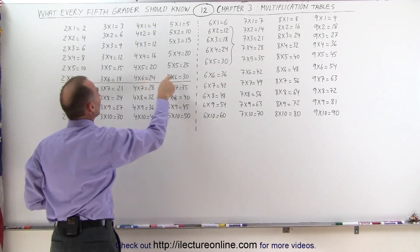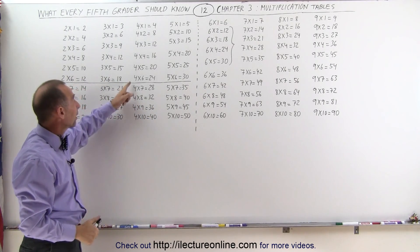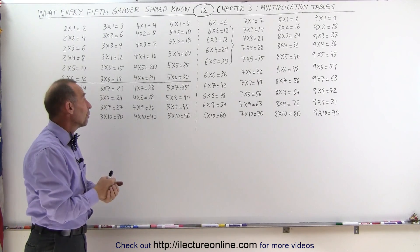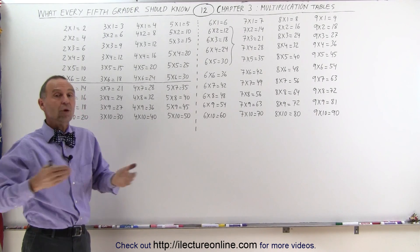12, 18, 24, and 30. So if you remember how to multiply 4 times 6, which is 24, then it's very easy to remember that 6 times 4 is also 24.